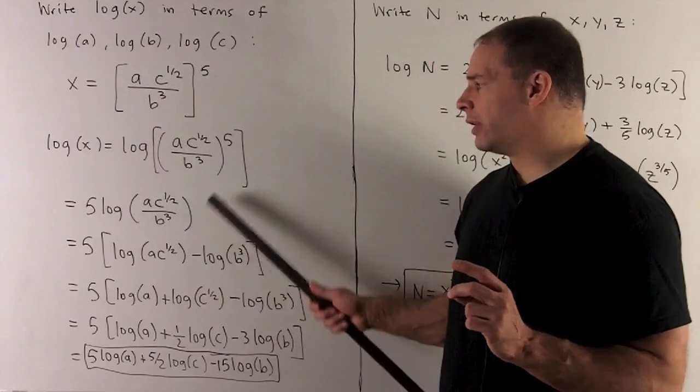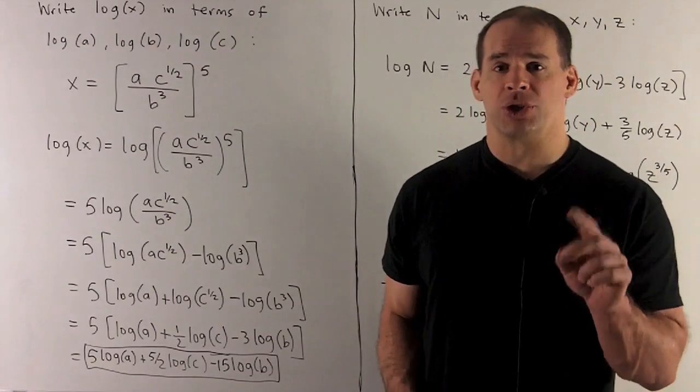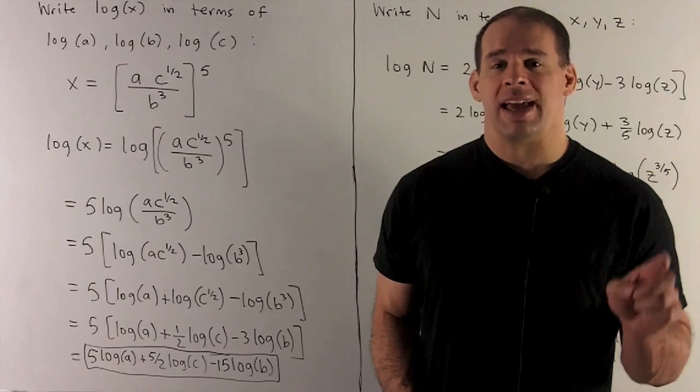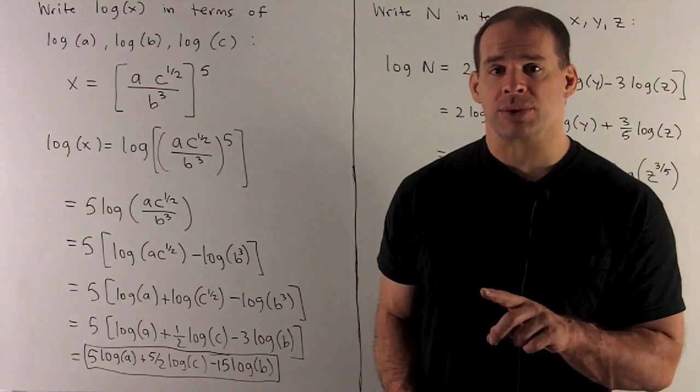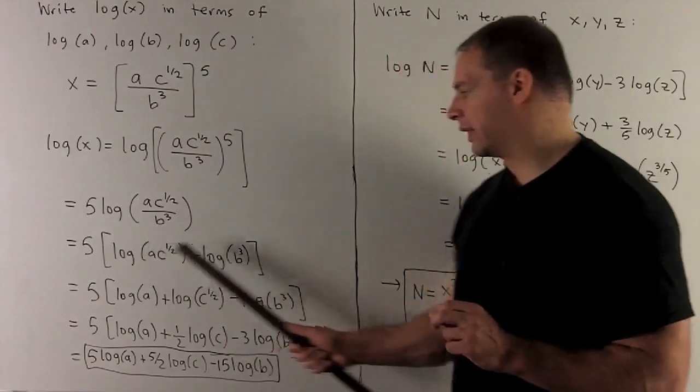Then we have a quotient on the inside. So I want to apply the quotient rule for logarithm. That says if you have a quotient on the inside, you can write it as a difference of two logarithms. The minus sign is going to apply to the denominator.